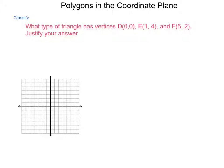What type of triangle has vertices located at the points D(0, 0), E(1, 4), and F(5, 2)? Justify your answer. Now, for these types of triangles, we're talking a scalene, an isosceles, or an equilateral. So, we need a lot of information here about side lengths. First, let's just plot the points to see what they would look like.